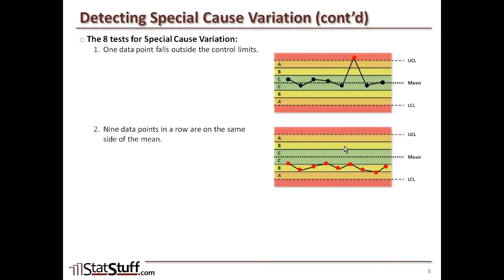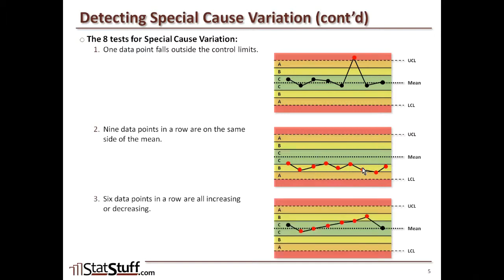That seems to be something that should not be happening — some sort of anomaly — because we expect normal process behavior to fall on both sides of the mean. If we're not seeing that, it could indicate some sort of special cause occurring.